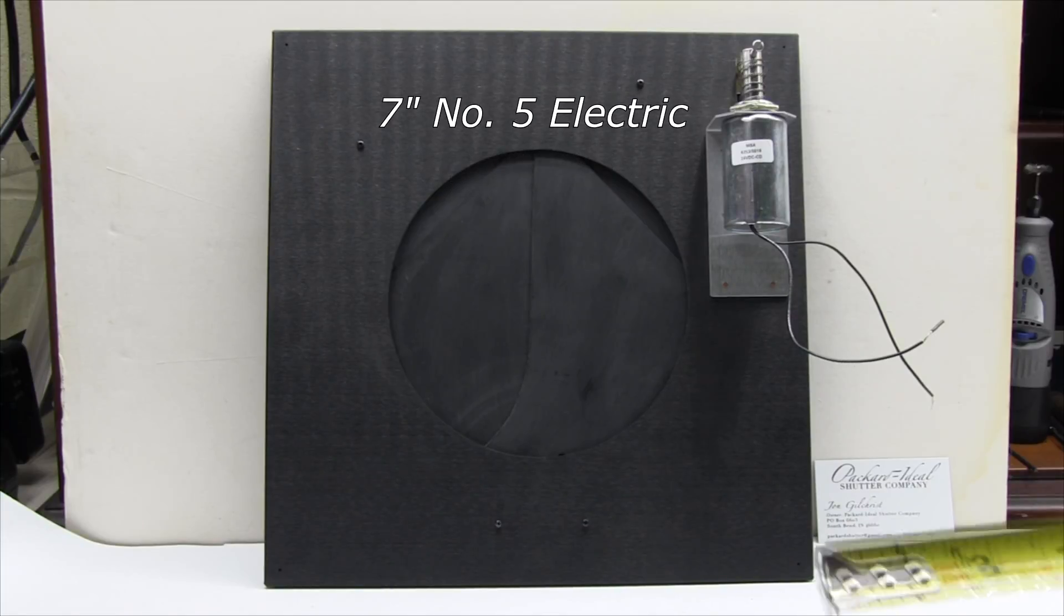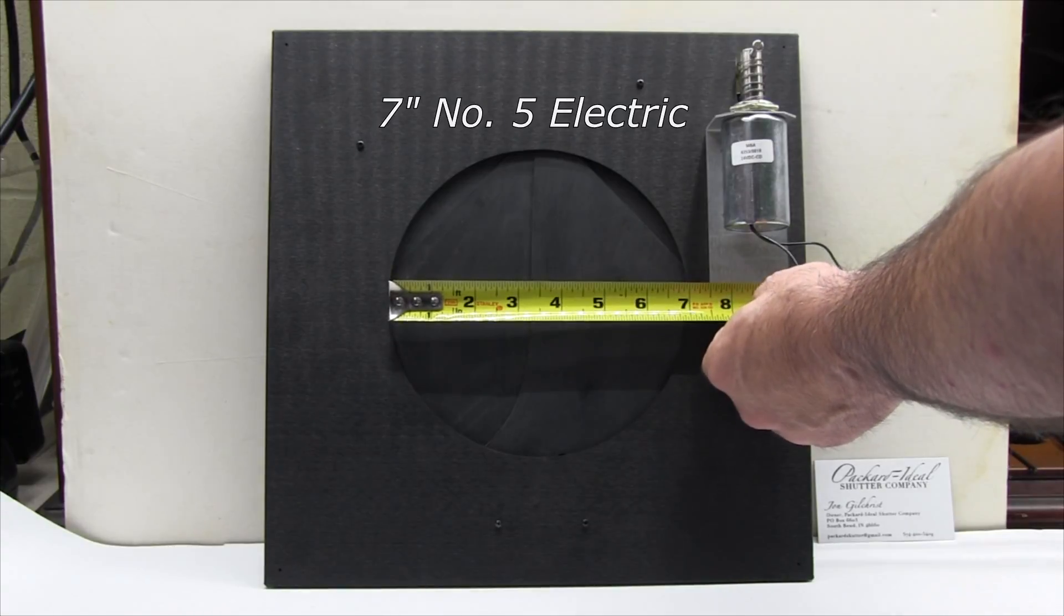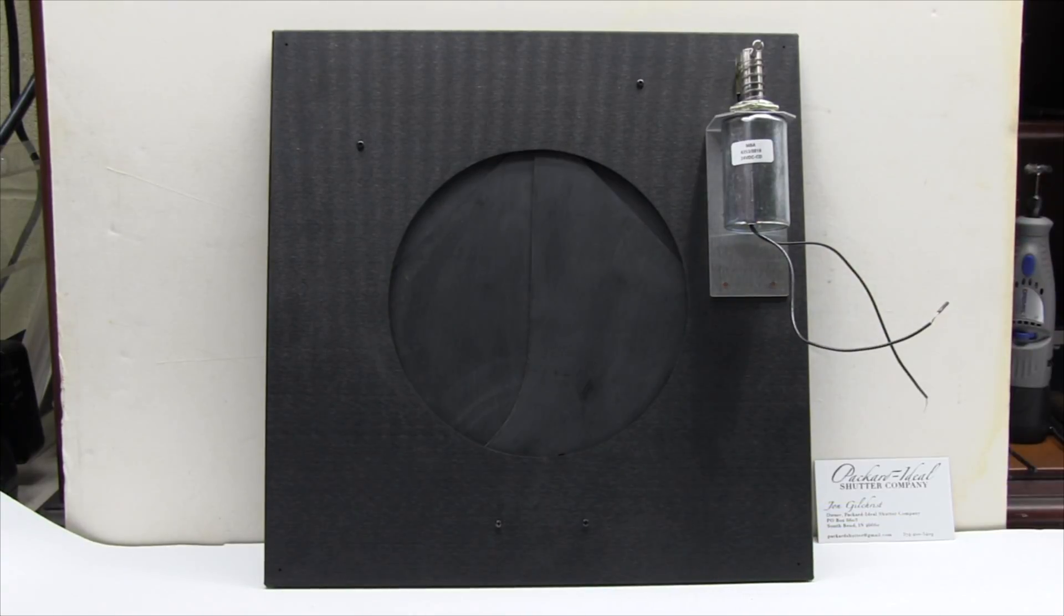This is a number five electric shutter. It is seven inches in diameter on the opening. That's one of the larger ones we make.